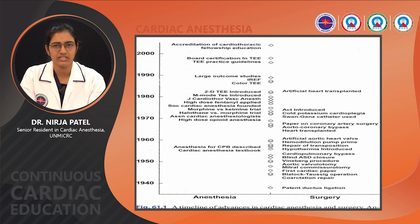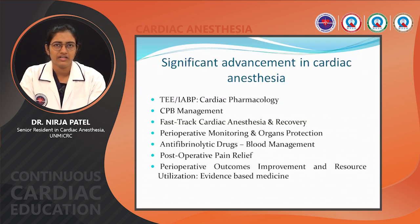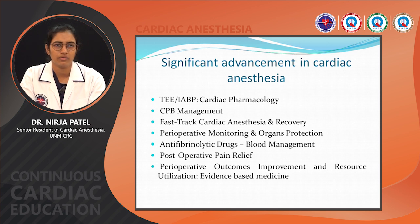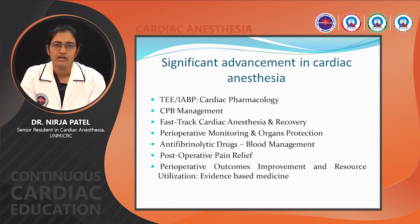This is the timeline of advancements in cardiac surgery and cardiac anaesthesia from 1940 to 2000. Significant advancements in cardiac anaesthesia to date include: use of transoesophageal echocardiography and intra-aortic balloon pulsation, cardiac pharmacology, management of cardiopulmonary bypass, fast-track cardiac anaesthesia and recovery, advancement in perioperative monitoring and organ protection, use of antifibrinolytic drugs to prevent blood loss specifically in on-pump cardiovascular surgeries, pain relief in the postoperative period, perioperative outcome improvement, and evidence-based medicine.